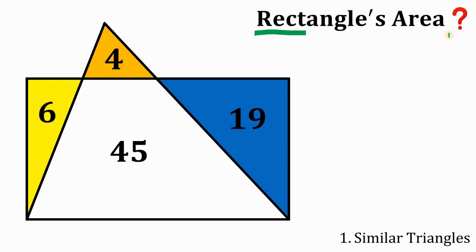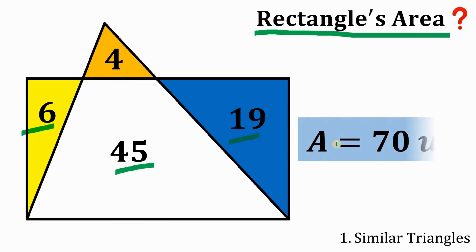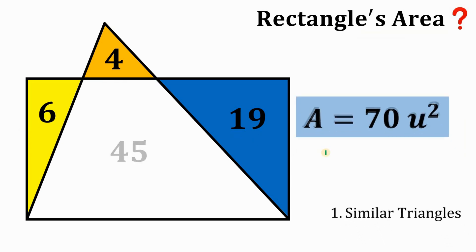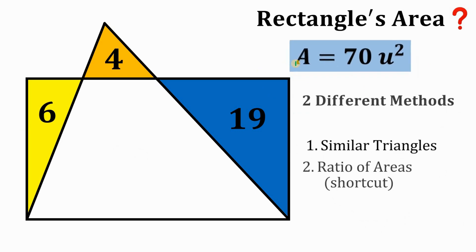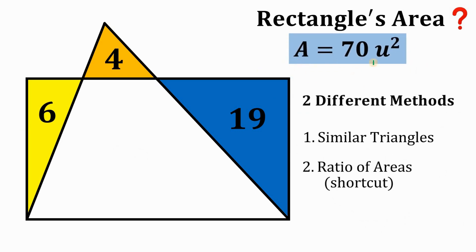Now the goal is the rectangle's area, so just add 6, 45, and 19, and we get 70 square units. Therefore, using our first method, we can say the area of this rectangle is 70 square units.